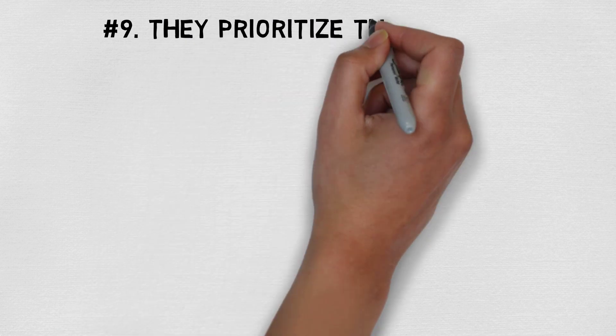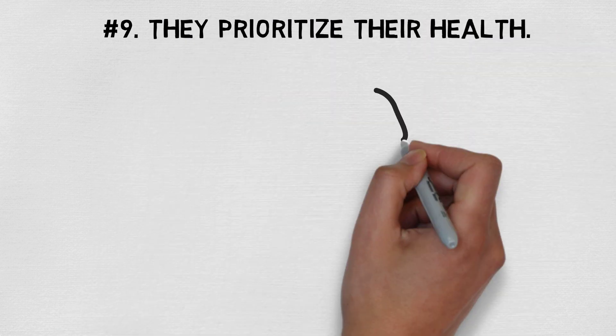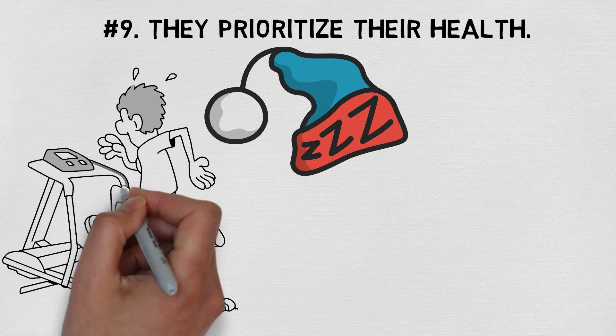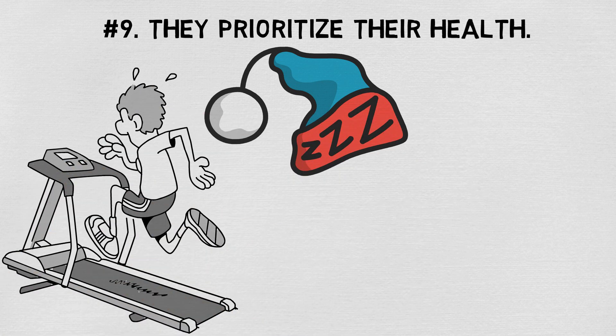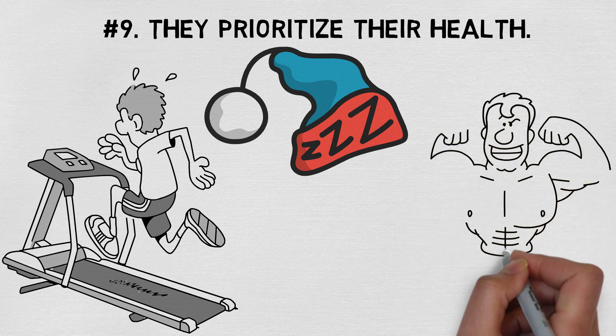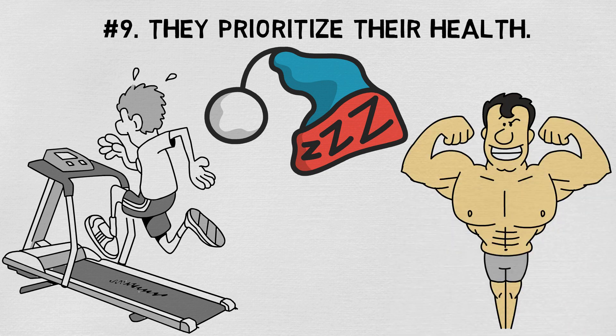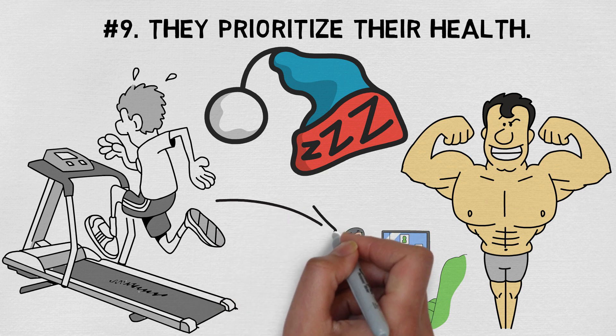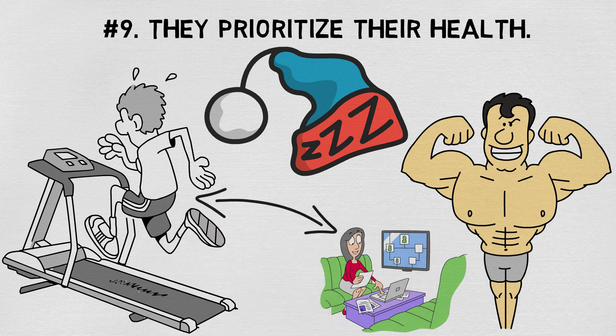Number nine, they prioritize their health. These people don't stop at having a healthy sleep cycle. A true sign of an intelligent person is when their health is prioritized, period. This means being conscious of what they put into their body and making executive decisions that place their health first. This doesn't mean that intelligent people don't indulge now and again. They simply know how to have a successful, balanced lifestyle.